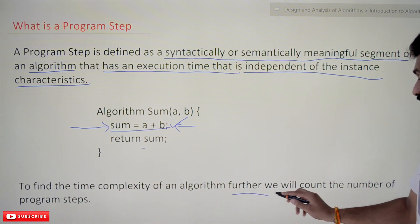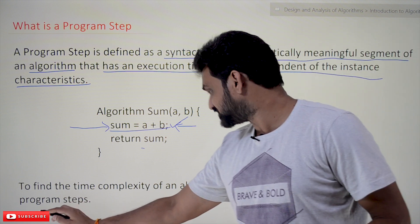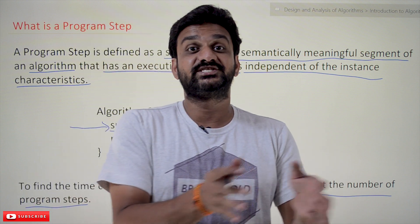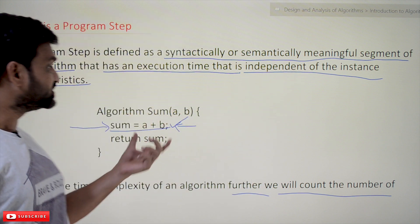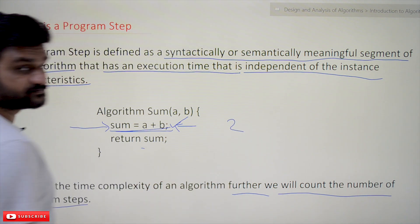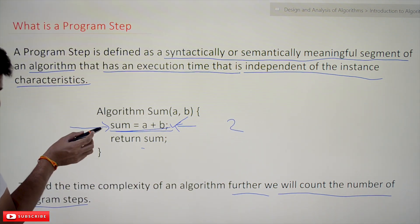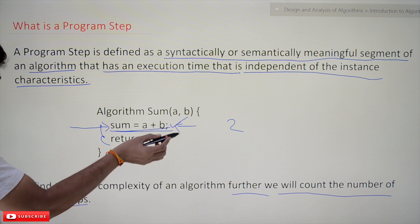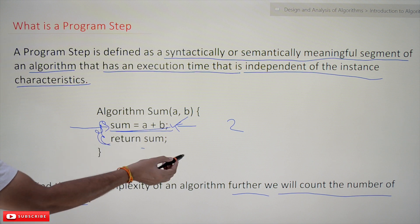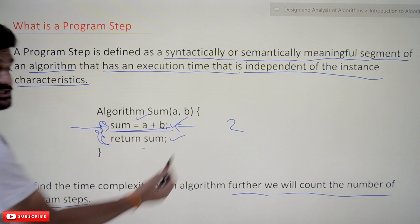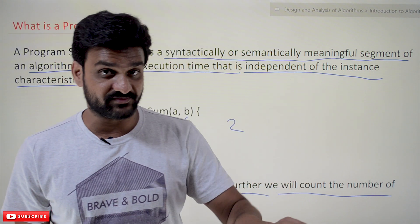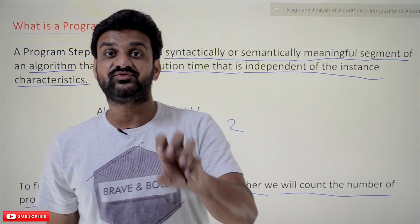From now on, we will consider the number of program steps as the time complexity of an algorithm. So what is the time complexity of this algorithm? The time complexity is 2, because 2 steps are getting executed. One is this program step and the other one is this program step. Simply put, you can consider each line of code of an algorithm as a program step.